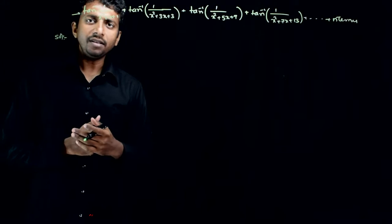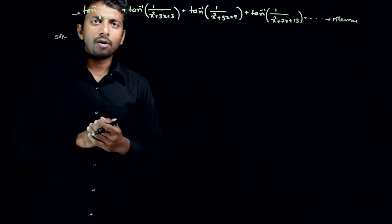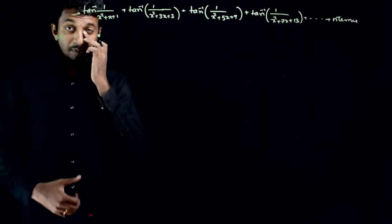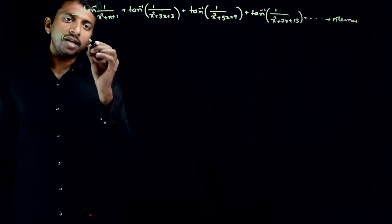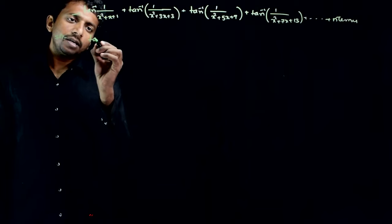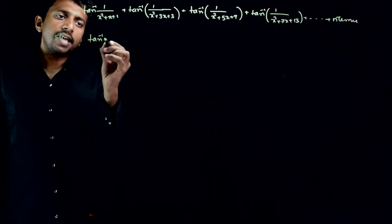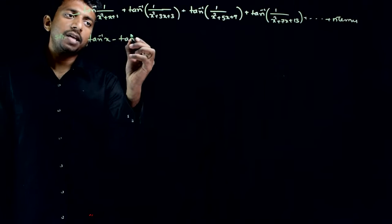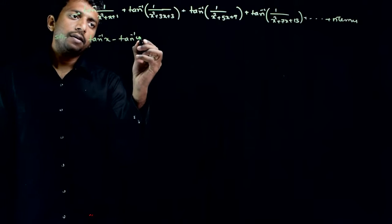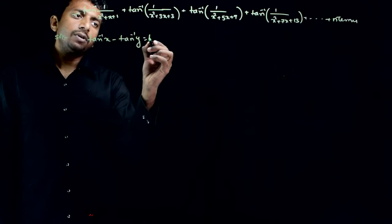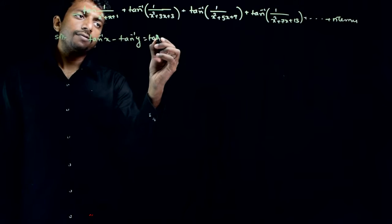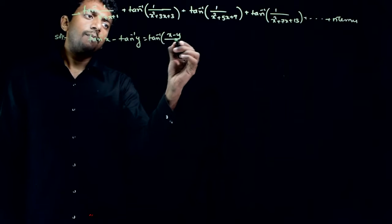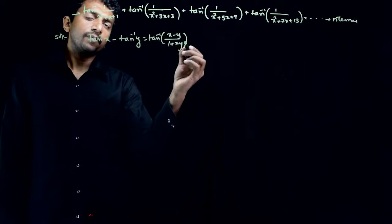Whenever you are asked to find the sum of tan inverse expressions, a basic formula to use is: tan inverse of x minus tan inverse of y is equal to tan inverse of (x minus y) divided by (1 plus x times y).